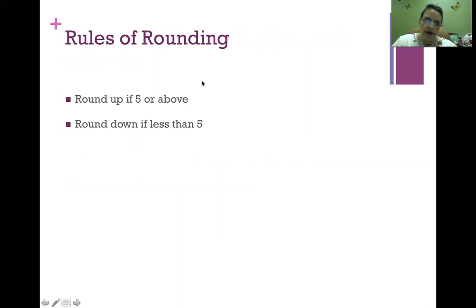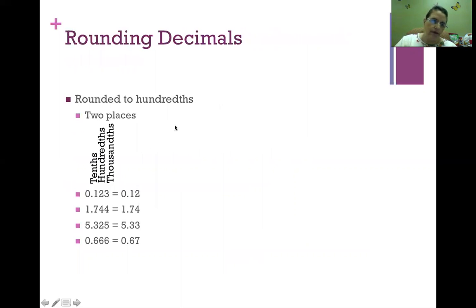Let's talk about rules of rounding for a minute. For 5 and above, we're going to round up. If it's below 5 or less than 5, we're going to round down. Let's look at this in a couple of examples.